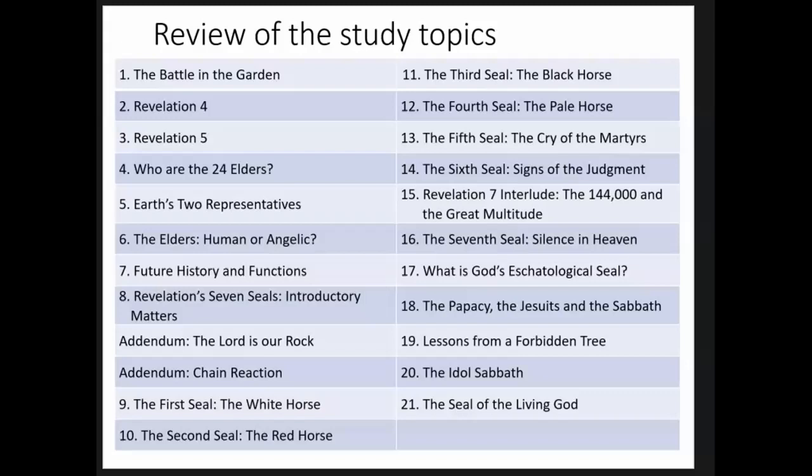The next studies, nine through sixteen, we will spend a lot of time actually studying the seals. The first seal is the white horse, the second is the red horse, the third is the black horse, the fourth is the pale horse, the fifth seal is the cry of the martyrs, and the sixth seal is the sign of the judgment. Then Revelation seven has an interlude between the sixth and seventh seals, introducing the 144,000 and the great multitude. Seal number seven is silence in heaven.